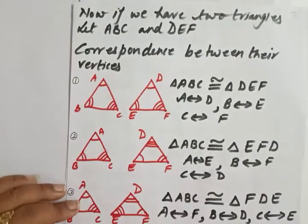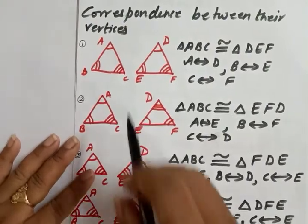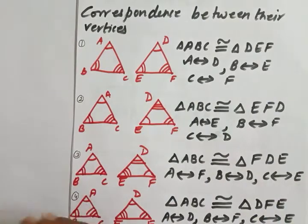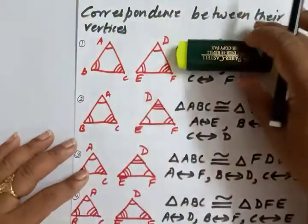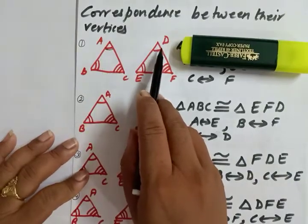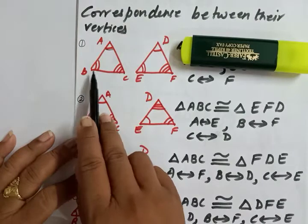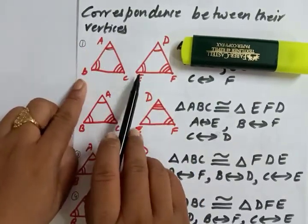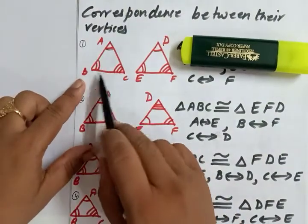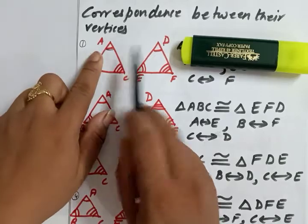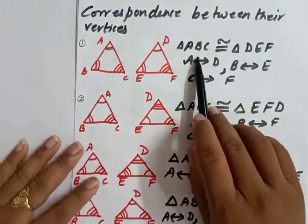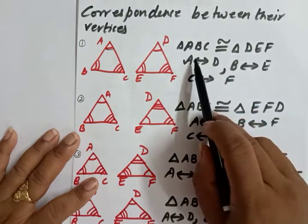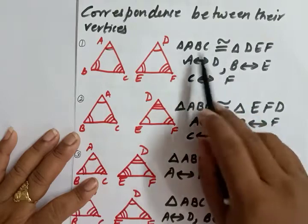How we write that two triangles are congruent - how we name them - is very important, and it depends on the correspondence between their vertices. For the first example: looking at triangle ABC and DEF, if angle A corresponds to angle D (indicated by single lines), angle B corresponds to angle E (two lines), and angle C corresponds to angle F, then we write triangle ABC is congruent to triangle DEF. The arrow from A to D means angle A equals angle D.